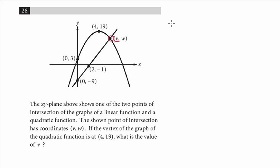Here we have two coordinate points, so we can use the formula for slope. We have (2, -1) and (0, -9). The formula for slope is the change in y over the change in x, so -1 minus -9, which is plus 9, and then 2 minus 0. That's 8 over 2, so the slope is 4.